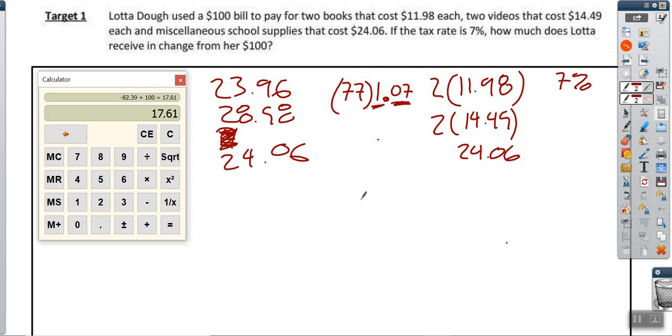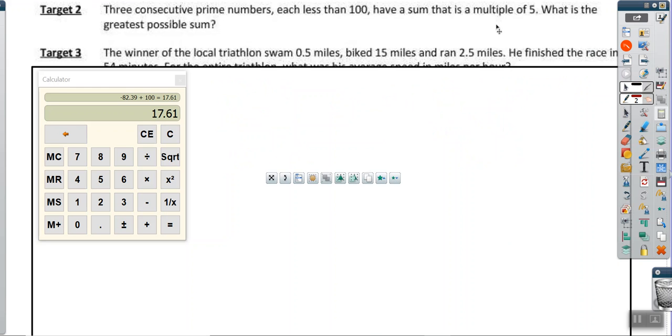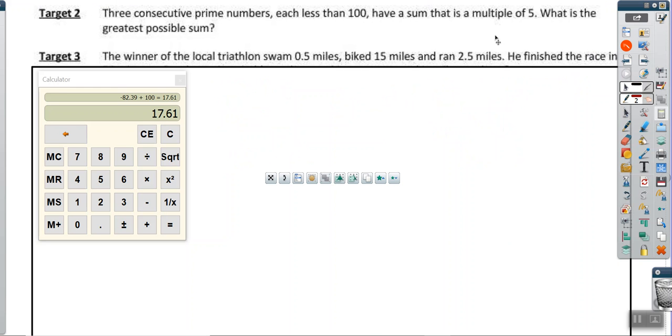So that was just a bit of using the calculator and making sure the computations are right. Now things are going to be a little more interesting with problem two. Three consecutive prime numbers, each less than one hundred, have a sum that is a multiple of five. What is the greatest possible sum?